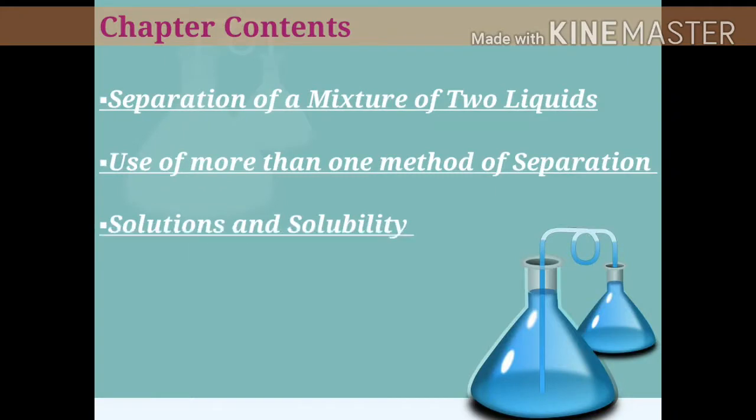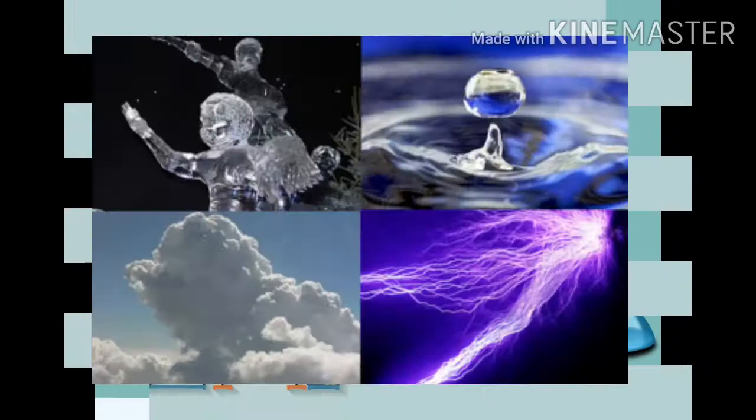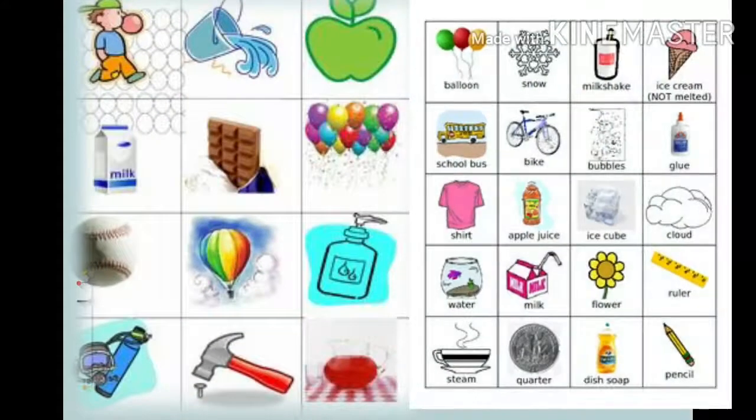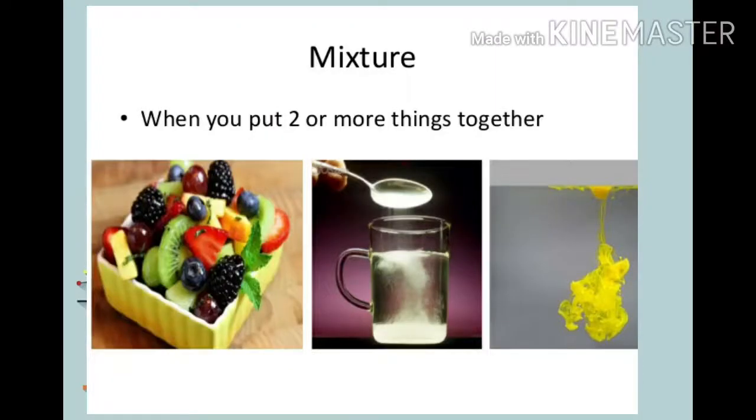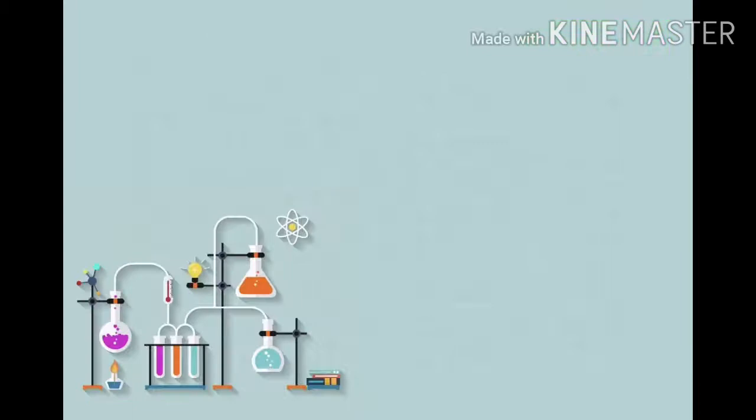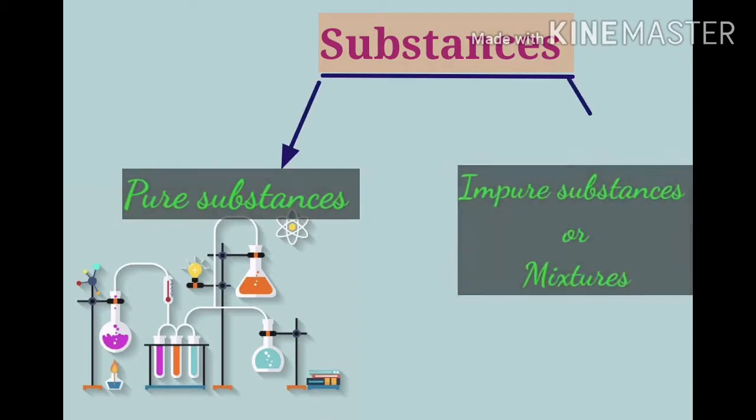So let us first understand what pure substances and impure substances or mixtures are. Everything in this universe is made up of different kinds of substances. Substances are mostly available in mixtures. A few substances are available in pure form, hence they can be divided into two groups: pure substances and impure substances or mixtures.